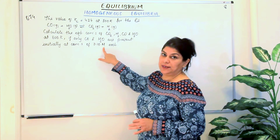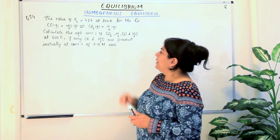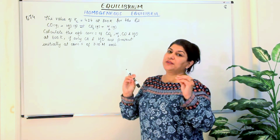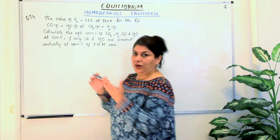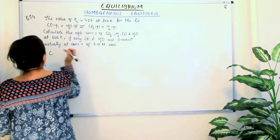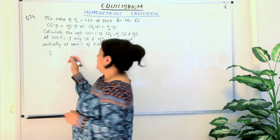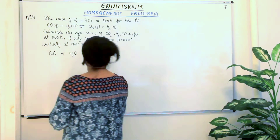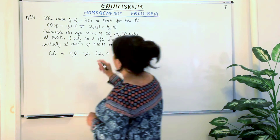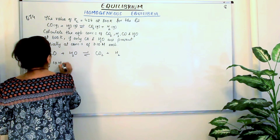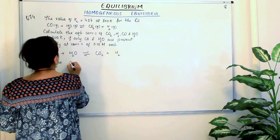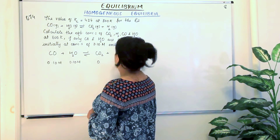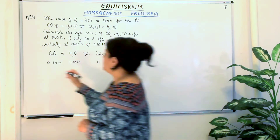Capital M stands for molarity, that is moles per liter. So for this equation let us write down the equation once again and see what the initial concentrations are and how we could go from there. We have the equation: CO plus H2O gives you CO2 plus H2. Initially we have started with concentrations of 0.10 molar carbon monoxide and 0.10 molar water. So if we started with only this, initial concentrations of carbon dioxide and hydrogen were 0.